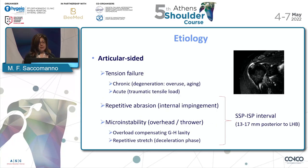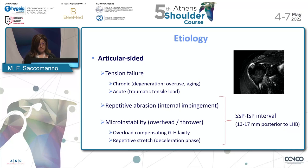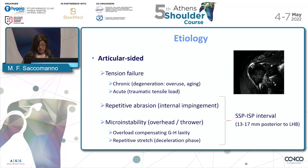For articular-sided tears, they can be acute — so traumatic — or chronic, caused by degeneration. But most commonly they are related to the phenomenon of internal impingement, particularly in overhead athletes. Their location is specifically, most of the time, in the interval between the supraspinatus and infraspinatus tendon from the articular side.